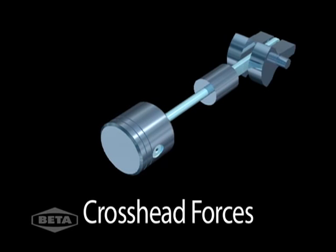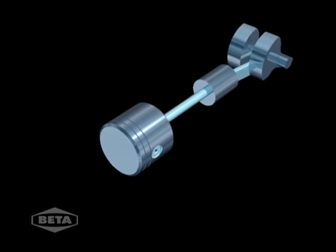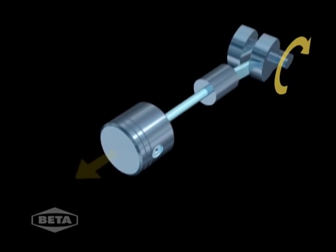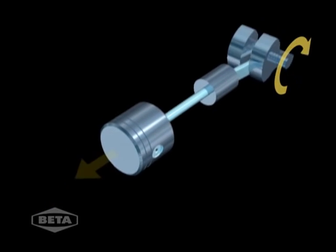Crosshead forces. As the rotating motion of the crankshaft gets converted into the reciprocating motion of the piston, a residual vertical force is created at the crosshead.